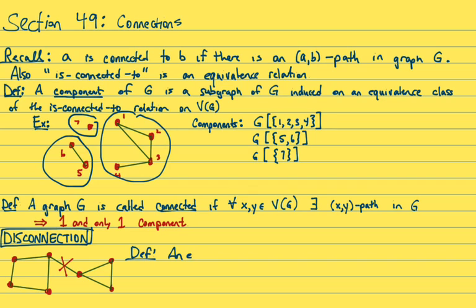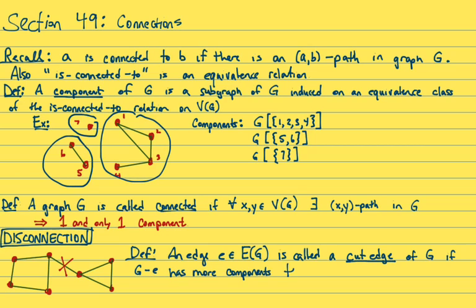So definition. An edge out of the edge set of G is called a cut edge of G if G minus E, the graph with that edge removed, has more components than G, that is called a cut edge.